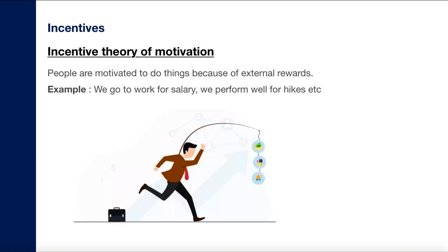So what is an incentive? There is this incentive theory of motivation which states that people are motivated to do things because of some external rewards. All of us do certain things because we get rewards for it. For example, we go to work for salary, we perform well for hikes — it's not voluntary work, you go to work for salary and perform well for hikes, which is a monetary reward and incentive that motivates human beings.